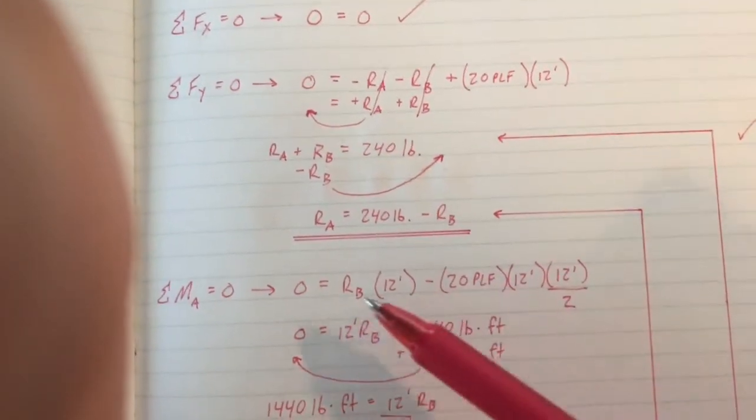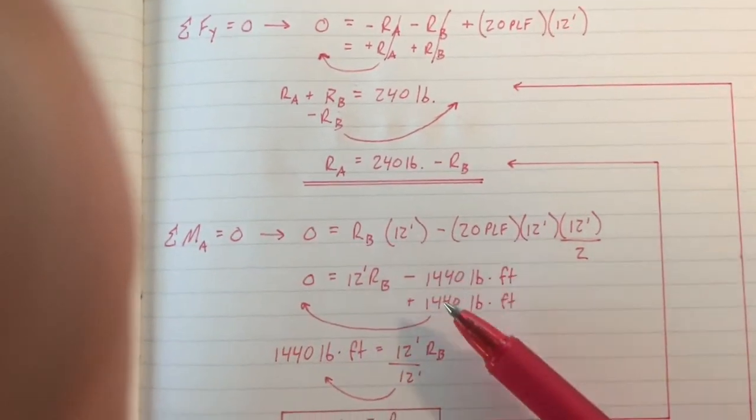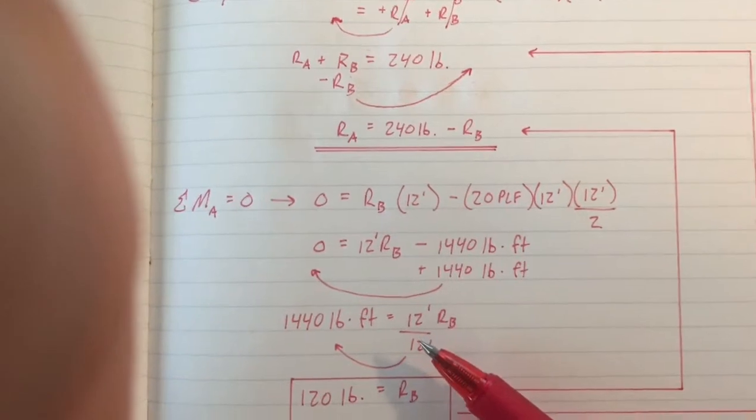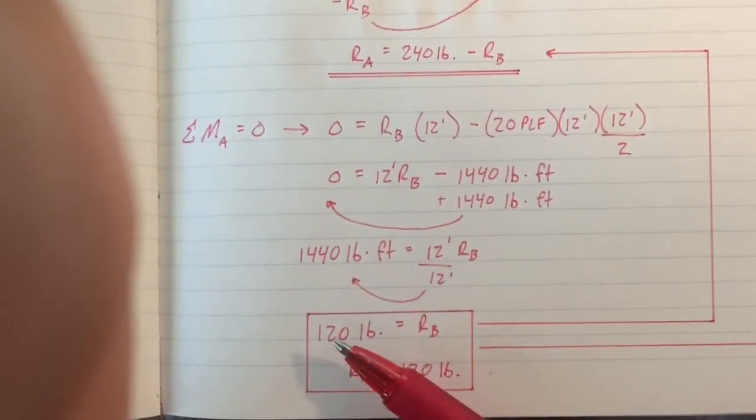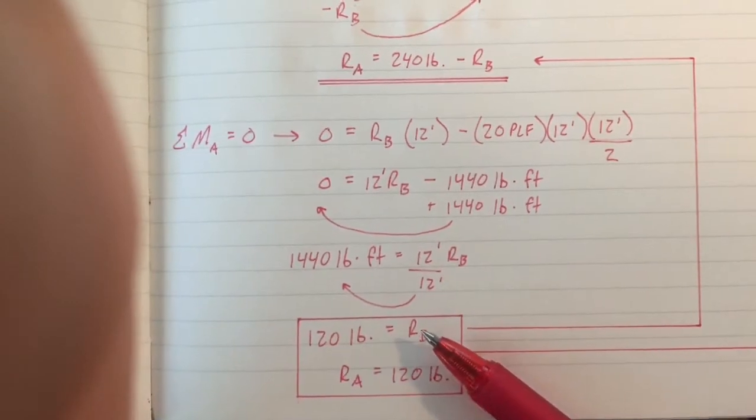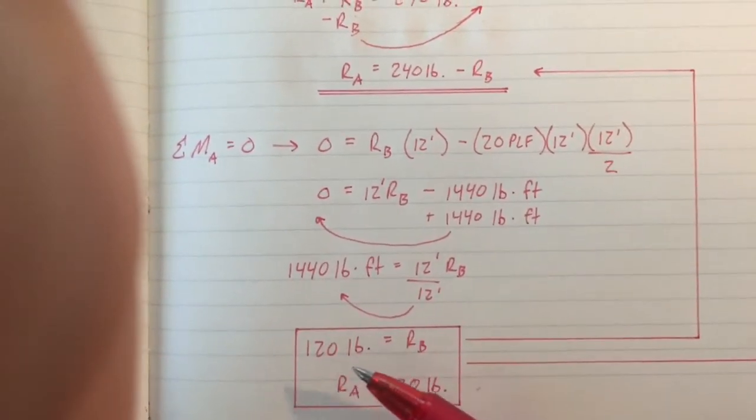So those are your two forces. If we take these, we break them down, we balance the equation, we end up with reaction B being able to be solved. Reaction B equals 120 pounds.